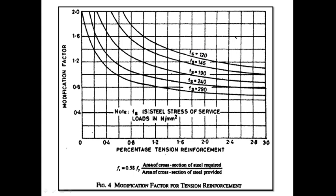IS code has played a very smart trick in formulating this graph. Since they know that as loads become heavier and bending moments increase, designers will try to put more steel instead of increasing the thickness, the instant they try to put more tensile steel, the modification factor decreases, making the slab unsafe in deflection. Some other people may think to increase the grade of steel instead — but IS code has again smartly played a trick: the instant you increase the grade of steel, your FS increases and your modification factor goes down, ultimately resulting in failure in deflection. IS code has made this graph in such a way that we are left with no option but to increase the depth of the slab.